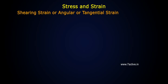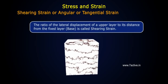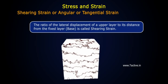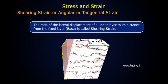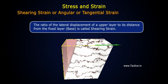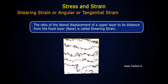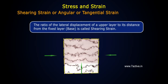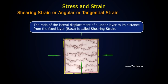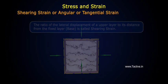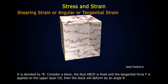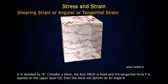3. Shearing strain or angular or tangential strain: The ratio of the lateral displacement of an upper layer to its distance from the fixed layer base is called shearing strain. It is denoted by theta.